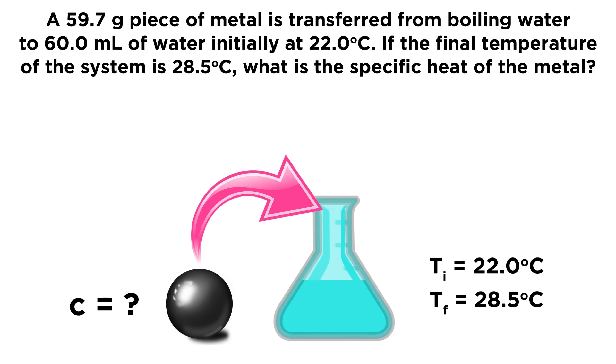So the question says, a 59.7 gram piece of metal is transferred from boiling water, and then we're going to put it in 60.0 milliliters of water that is initially at 22.0 degrees Celsius. If the final temperature of the system, so the metal in the cold water, ends up at 28.5 degrees Celsius, what is the specific heat of the metal?